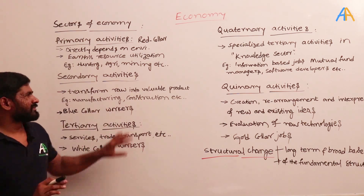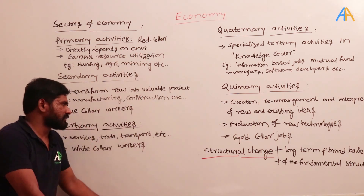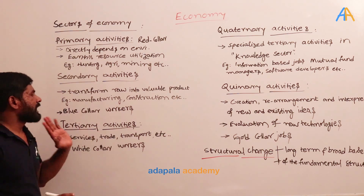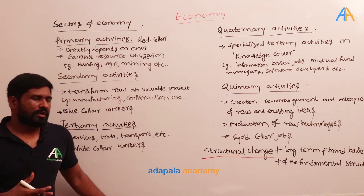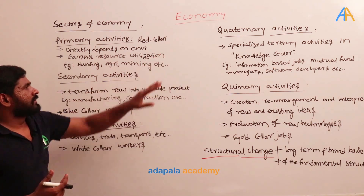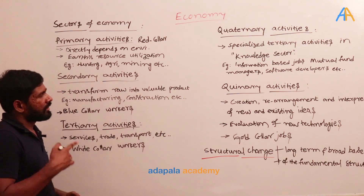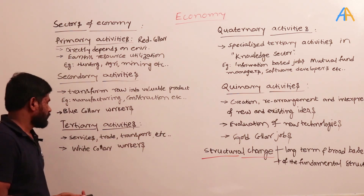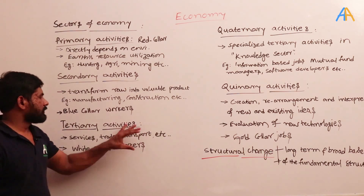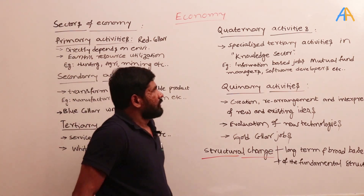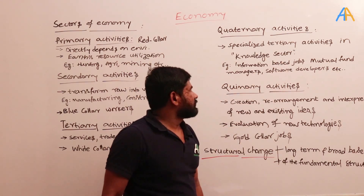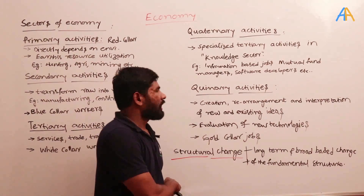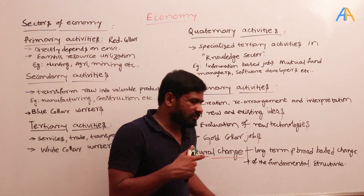Secondary activities are called blue color workers — just remember this. The next one is tertiary activities, related to knowledge-based or service-based work. This is further divided into quaternary and quinary activities. Tertiary activities include services, trade, transport, etc., and are called white color workers. The specialized tertiary activities in the knowledge sector are called quaternary activities.